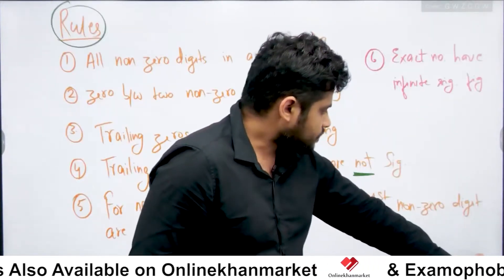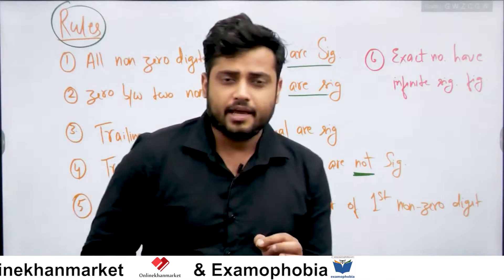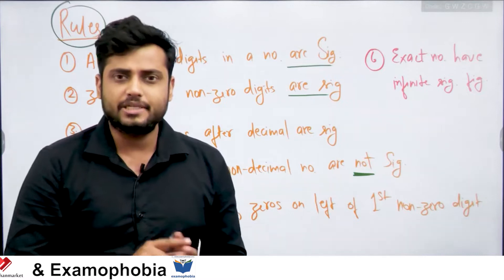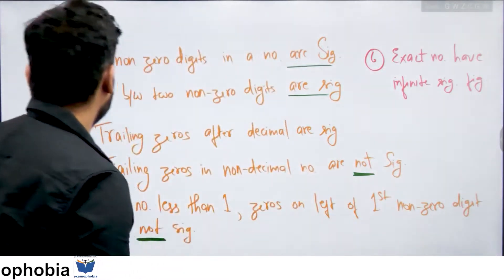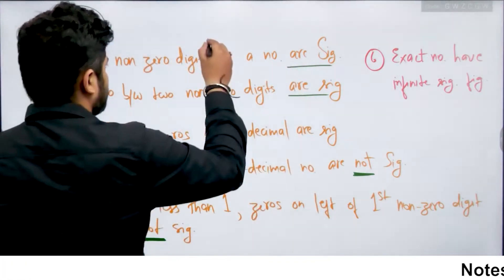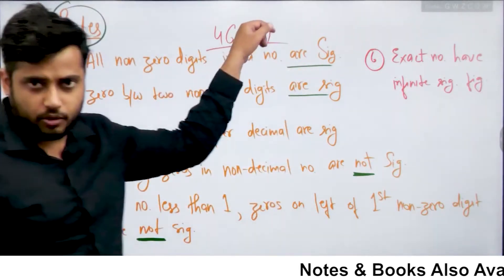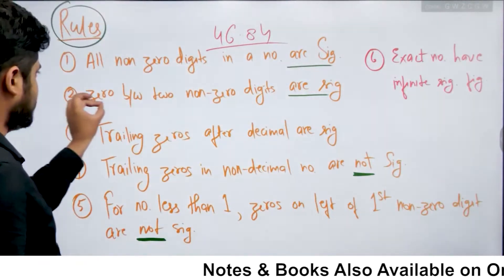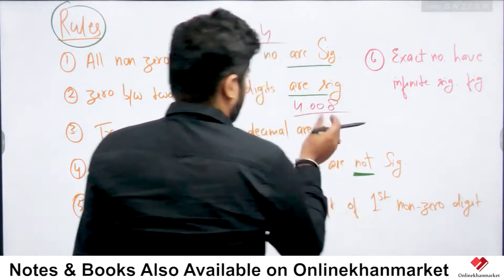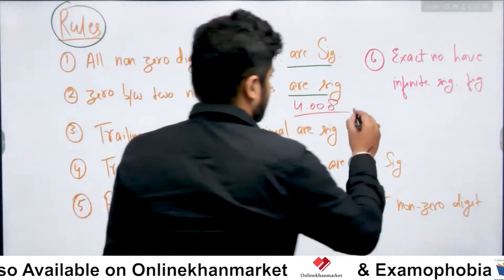Last class ke andar humne dekha, significant digits ko likhne ke kuch rules kya honge. Toh sabse pehli cheez jo humne dekhi thi, ki agar hum units ko change kar rahe hain, to units ke change hone se number of reliably known digits in a measurement woh change nahi hogi. Us basis par humne kuch rules yahan par decide kiye hain. Jaise ki, all non-zero digits in a number are significant. For example 46.84 — yahan par saari ki saari digits non-zero digits hain, yeh saari significant hongi. Zero between two non-zero digits are also significant — for example 4.008, do non-zero numbers ke beech mein 2 zeros hain, to yeh zeros bhi significant hongi, yaani ki yahan par 4 significant digits hain.